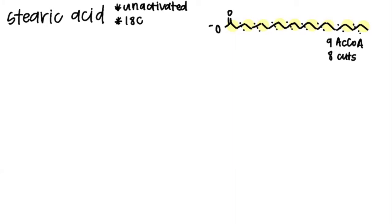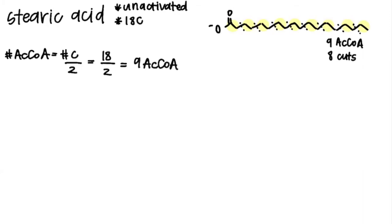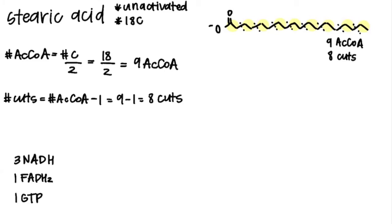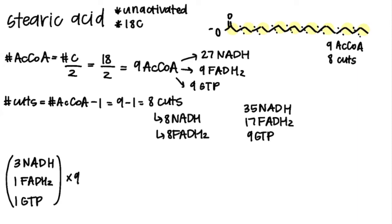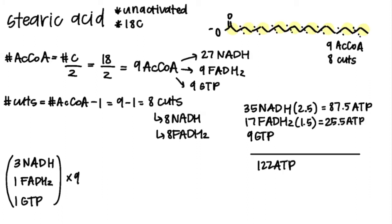Now let's look at the math. For the number of acetyl-CoA, we take the number of carbons and divide by two: 18 divided by two gives nine acetyl-CoA. The number of cuts is the number of acetyl-CoA minus one, so we get eight cuts. For acetyl-CoA through the TCA cycle, multiplying by nine gives 27 NADH, nine FADH2, and nine GTP. From eight rounds of beta oxidation, we get eight NADH and eight FADH2. Multiplying by 2.5 and 1.5 respectively gives a subtotal of 122 ATP.